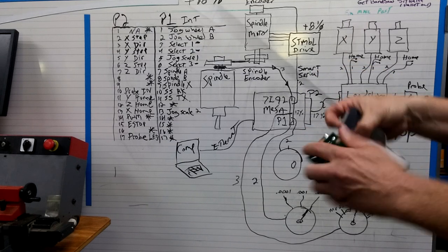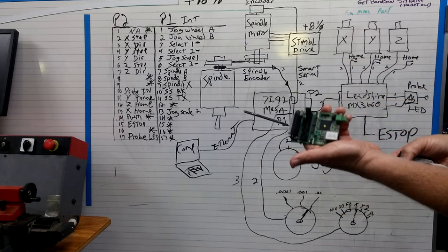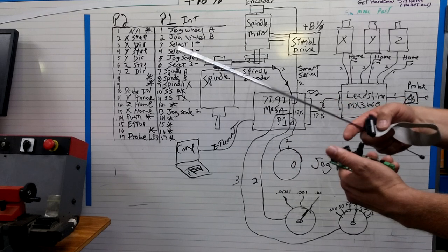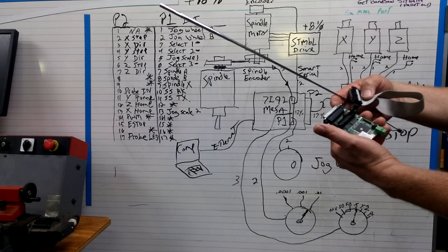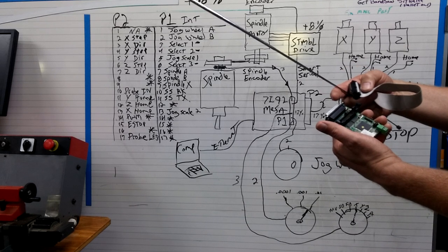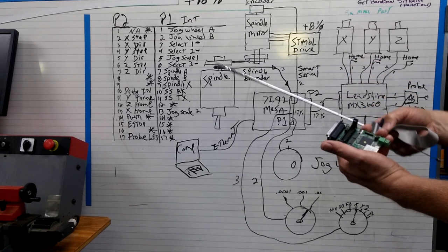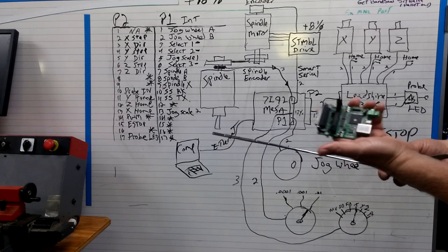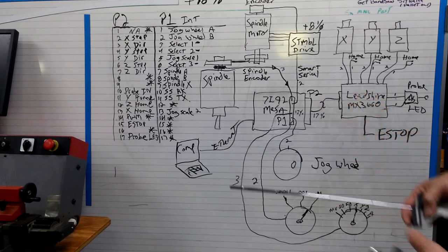But it does high speed step generation, PWM, encoder counting, plus it's expandable. You can plug in daughter cards that do analog servo interfacing or stuff like that. It's pretty amazing how flexible Mesa stuff is.